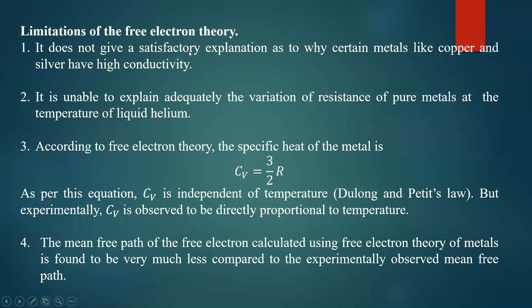The first failure: it does not give a satisfactory explanation as to why certain metals like copper and silver have high conductivity compared to iron and aluminium. Copper and silver have higher conductivity, but that cannot be explained using this classical theory. The classical theory gives the expression for sigma as ne²τ divided by m — these are all constants for a given metal — so it cannot explain why a particular material has higher conductivity.